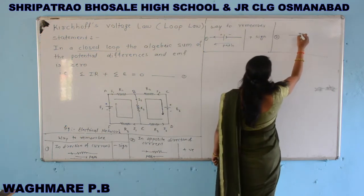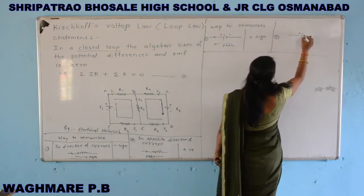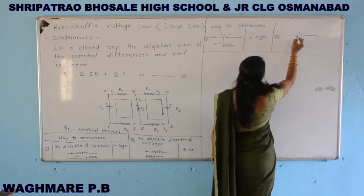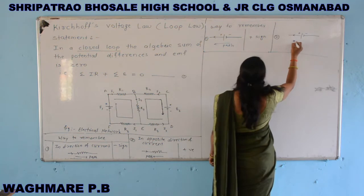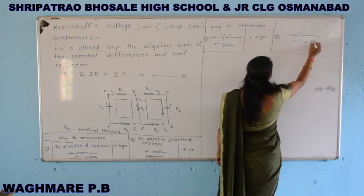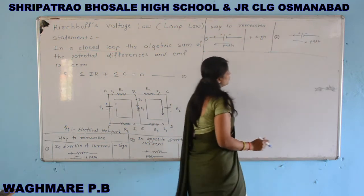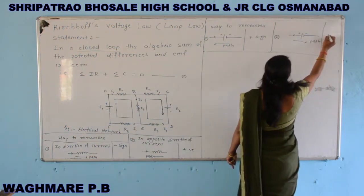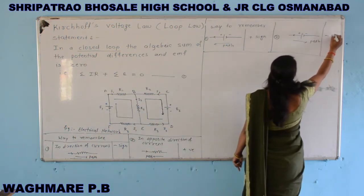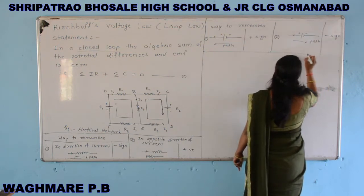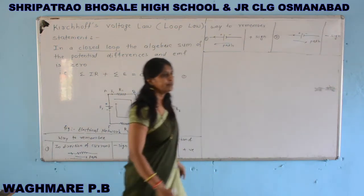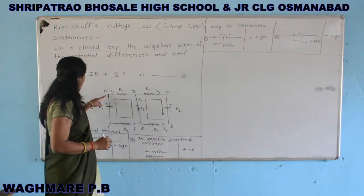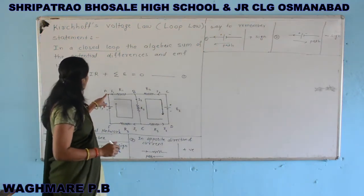In the second case, the positive terminal and negative terminal are arranged with current in a given direction, but our loop direction is the same as the current through the cell from positive to negative terminal. In that case, the sign of the EMF is taken as negative.